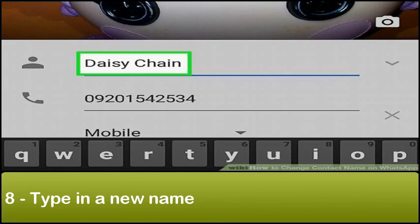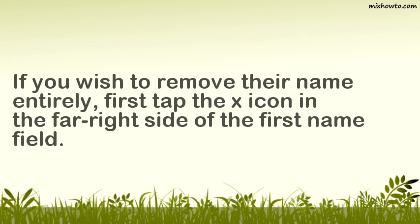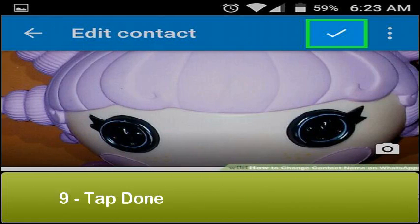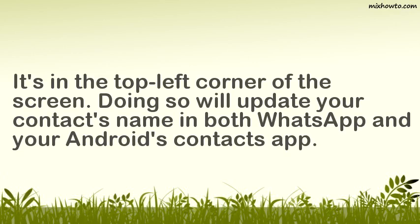Step 8: Type in a new name. If you wish to remove their name entirely, first tap the X icon in the far right side of the first name field. Step 9: Tap Done — it's in the top left corner of the screen. Doing so will update your contact's name in both WhatsApp and your Android's contacts app.